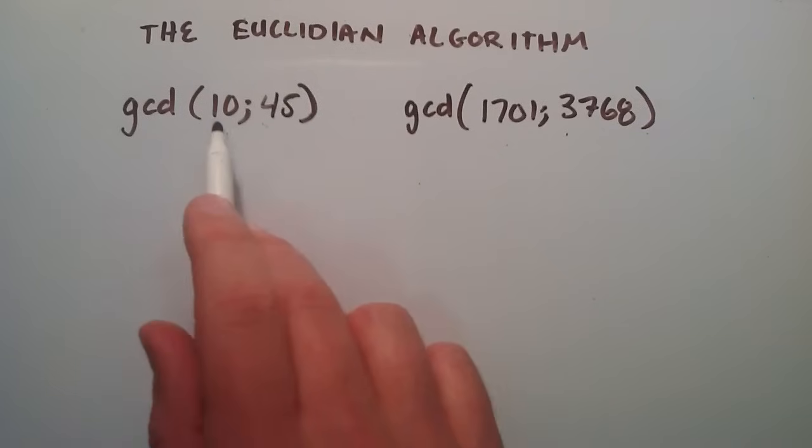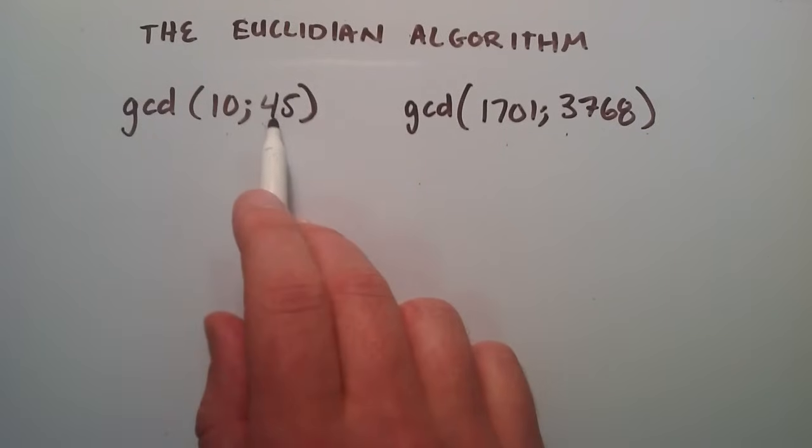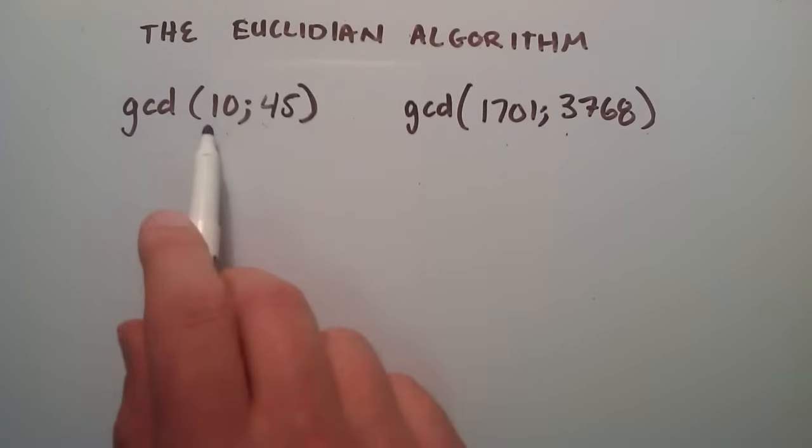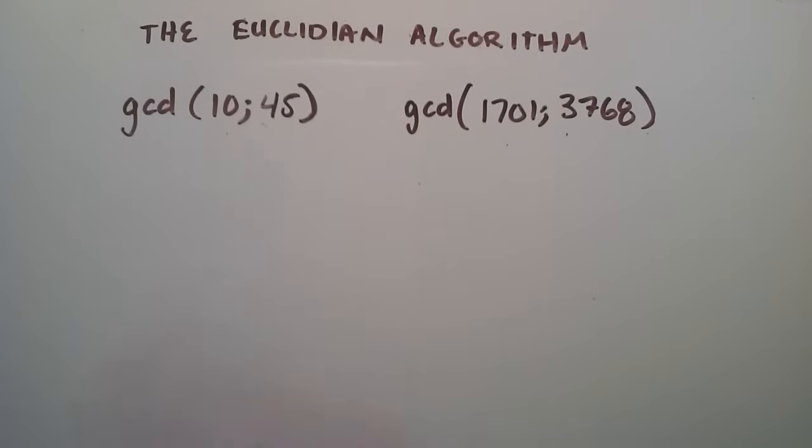So for this first example, I've got the numbers 10 and 45, and the greatest common denominator is going to be the largest number that divides both 10 and 45 evenly. So in this case, it's going to be the number 5, but if we couldn't see that, we could use the Euclidean algorithm to find the same answer.